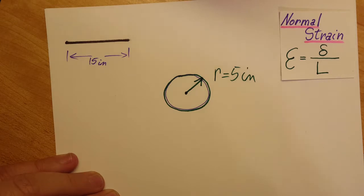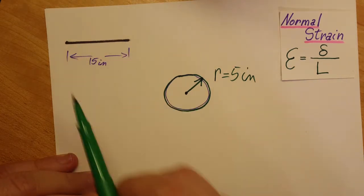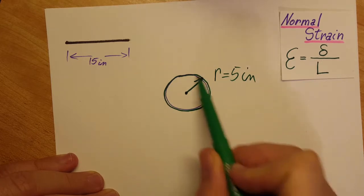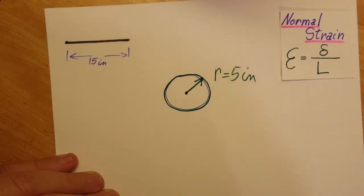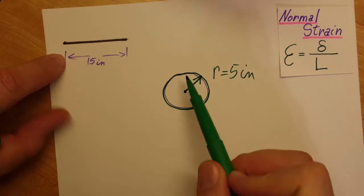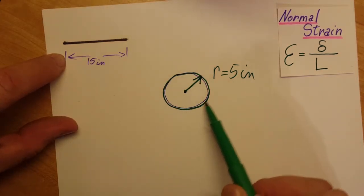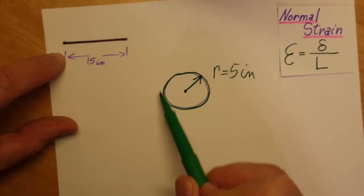There you go, this is the change that we are talking about. We're gonna go from 15 inches to going around the circle with a diameter of 5 inches. Now what changed to the rubber? We had 15 inches here, and in order to find its current length, we can calculate the perimeter of the circle.